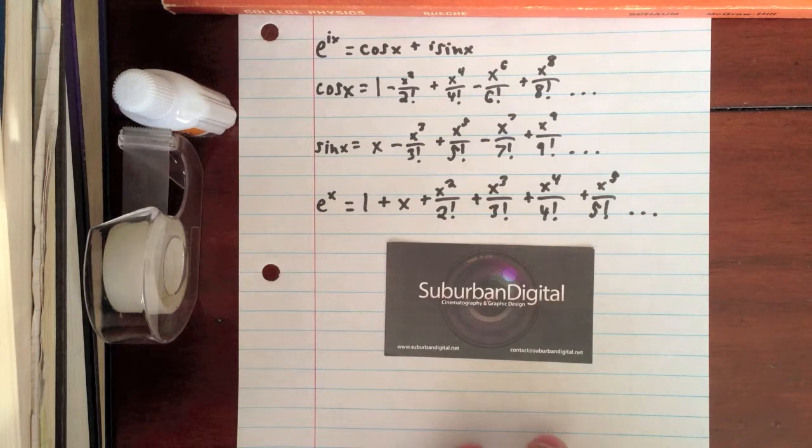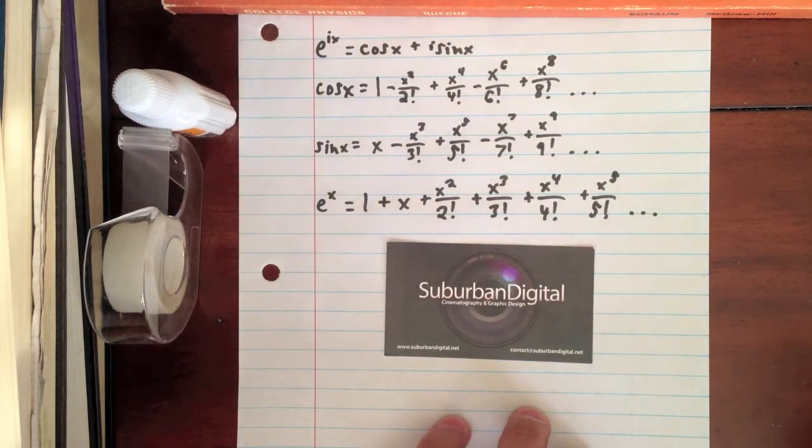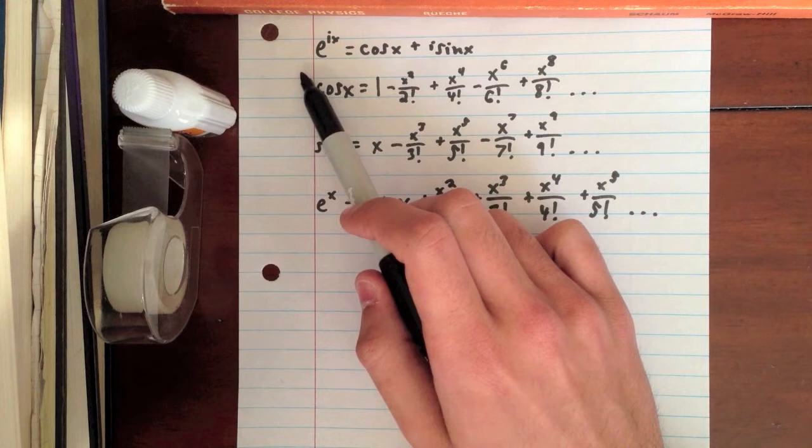To start off, Euler's formula is e to the ix equals cosine x plus i sine x, shown right there.